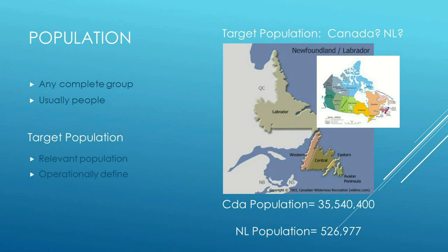The first thing we need to do is define exactly what we mean by some of the terms we use in sampling. The first term is population. Population refers to any complete group — normally the entire group. Our study population refers to the specific group that we're studying.